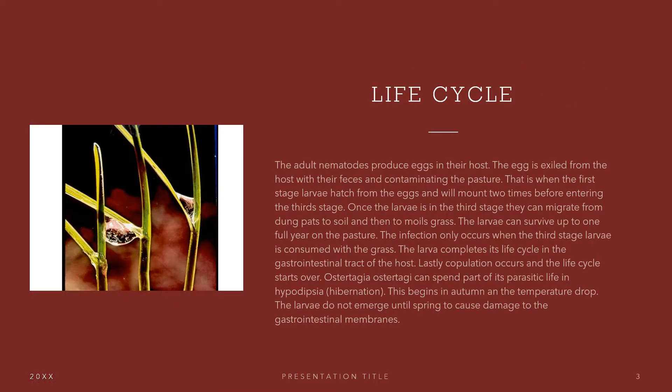Now let's speak about the life cycle of this parasite. The adult nematodes produce eggs in their host. The eggs are expelled from the host with their feces and contaminate the pasture. That is when the first stage larvae hatch from the eggs and will molt two times before entering the third stage. Once the larvae are in the third stage, they can migrate from dung pads to soil and then lastly to moist grass. The larvae can survive up to a full year on the pasture.